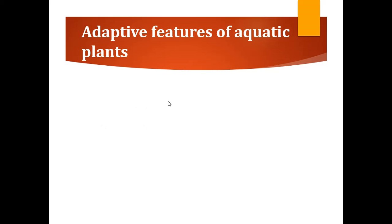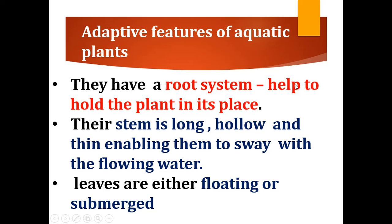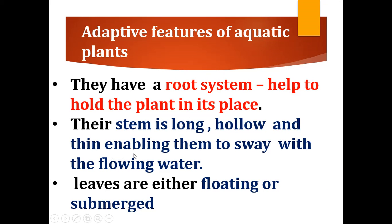Now let's look at the adaptive features of aquatic plants. Plants which live in water have certain features. They have a root system which helps to hold the plant in place. Their stem is long, hollow, and thin, enabling them to sway with flowing water.